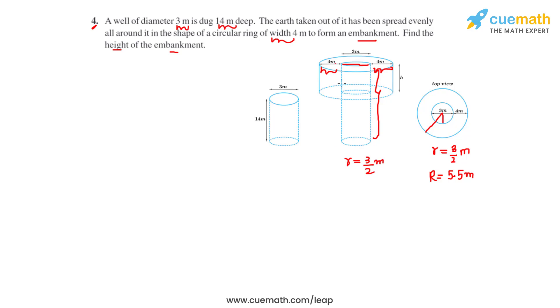We know that the height or depth of the cylindrical well is 14 meters, so h₁ = 14 meters. From the question, it's evident that the volume dug out equals the volume of the embankment. With this information, the volume of the